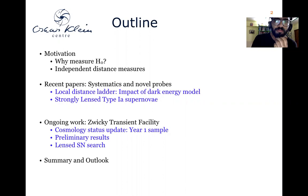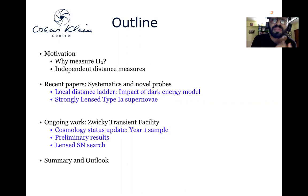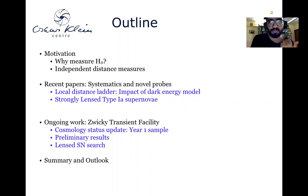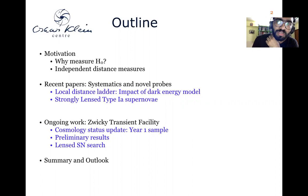Over the next 20-odd minutes, I'll start by giving a brief motivation for why we want to measure the Hubble constant and what are the different independent distance measures. In the first part, I'll talk about recently concluded work on systematics in the local distance ladder estimate of H0 — specifically the impact of assumed dark energy properties on the inferred value of H0 — and the first resolved strongly lensed type Ia supernova and inferences on magnification and extinction. In the second part, I'll cover ongoing work from the Zwicky Transient Facility: a status update for the year-one type Ia supernova Hubble diagram, preliminary results, and the lensed supernova search from ZTF.